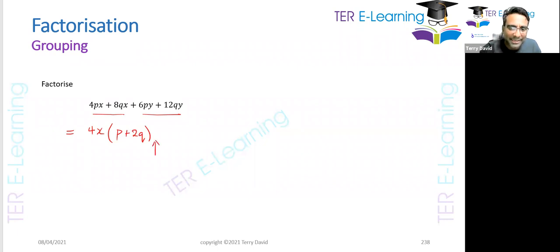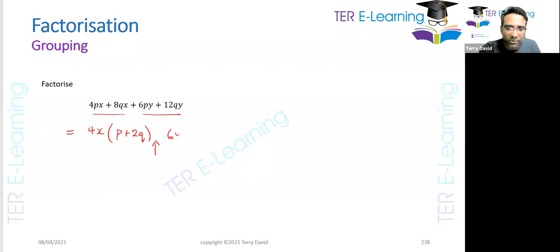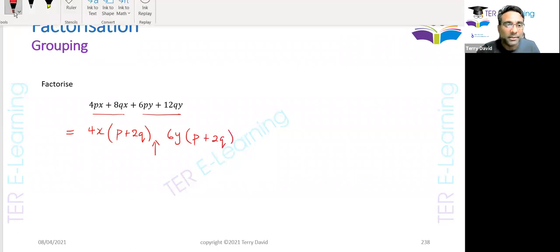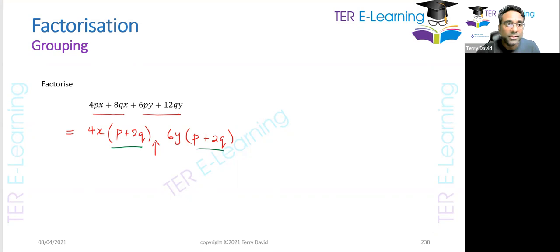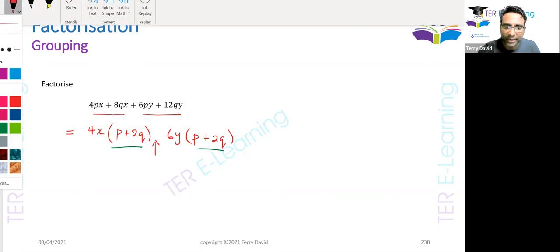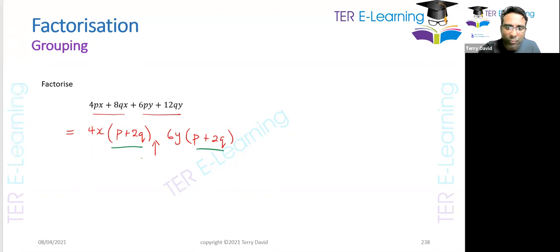Now factorize the second part, but don't put your sign in yet. The HCF of 6 and 12 is 6, and y is also common, giving us 6y(p + 2q). Here's the key point: when factorizing by grouping, those two brackets must be the same. That's why you factorize first before deciding on the sign.